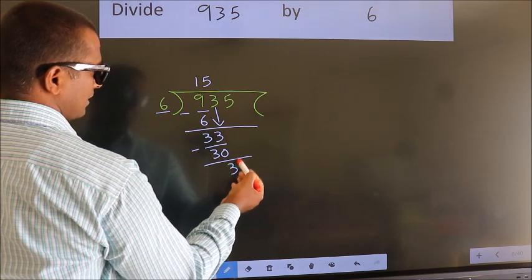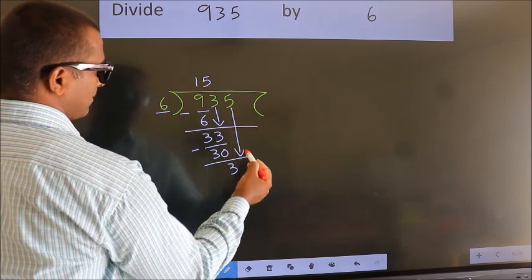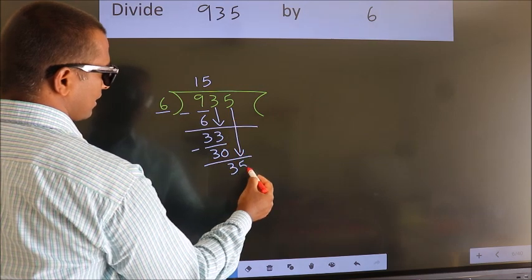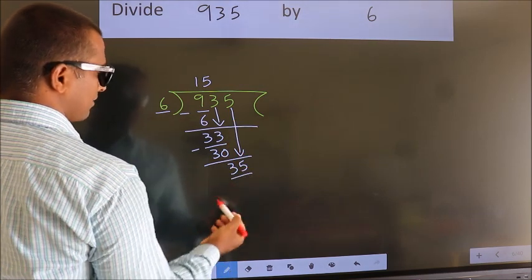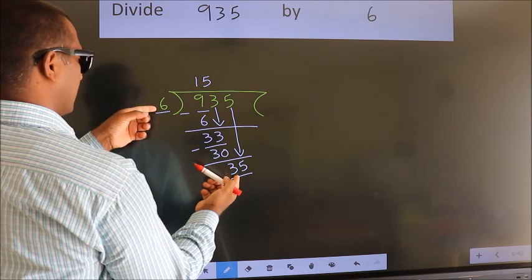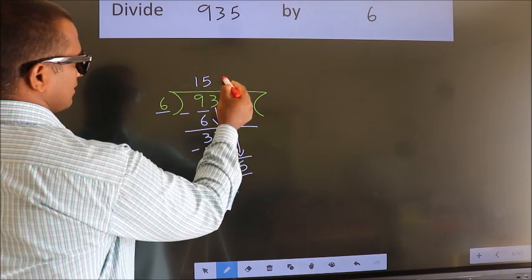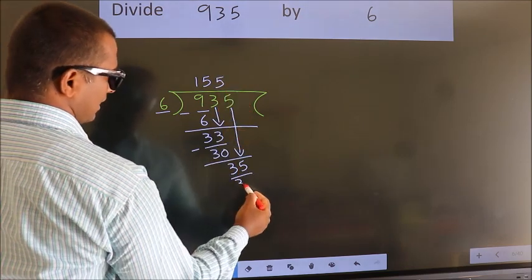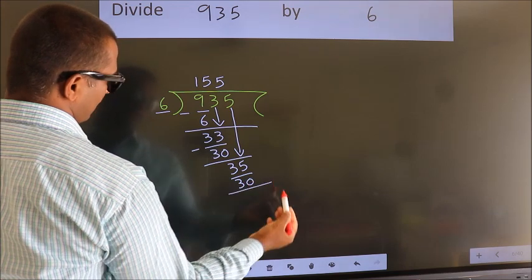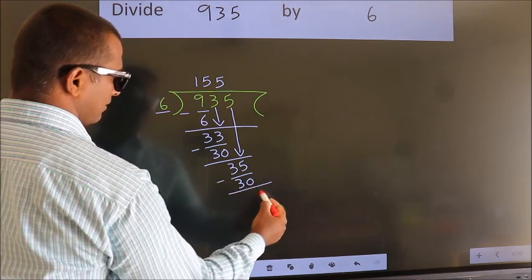After this, bring down the beside number. So 5 down, so 35. A number close to 35 in 6 table is 6 fives 30. Now we subtract. We get 5.